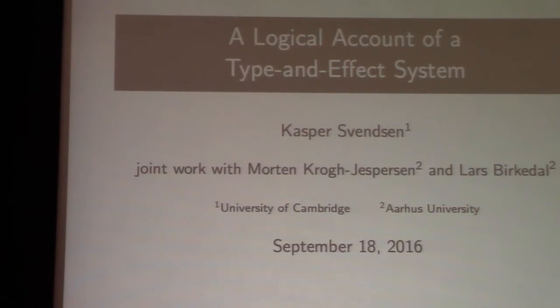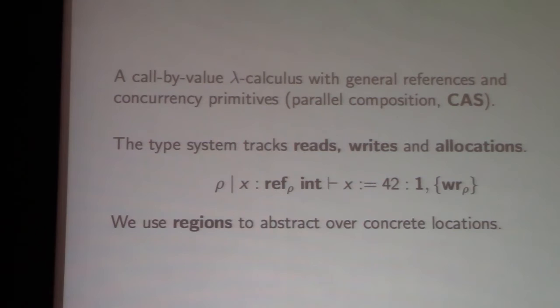My name is Kasper and I'm going to be talking about a semantics for a type and effect system. This is based on joint work with Morten Kohl-Jaspersen and Lars Birgde. I'm going to start by introducing the language that we're studying: a call-by-value lambda calculus extended with general references and concurrency primitives, with concurrency expressed in terms of parallel composition.